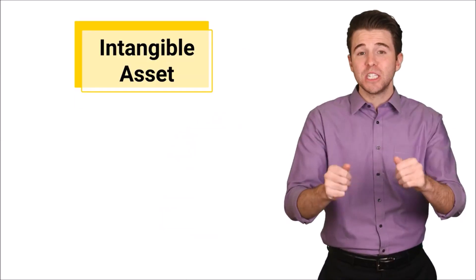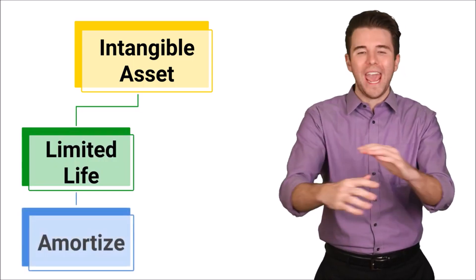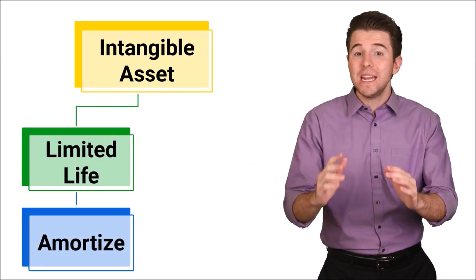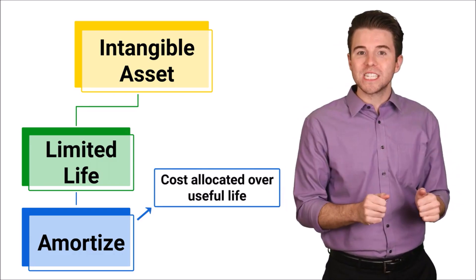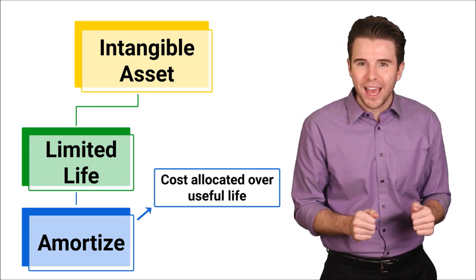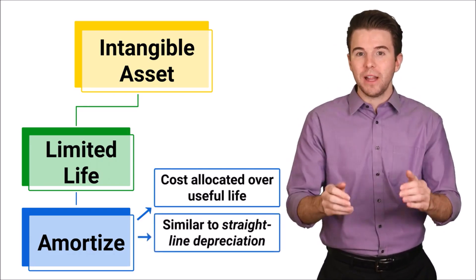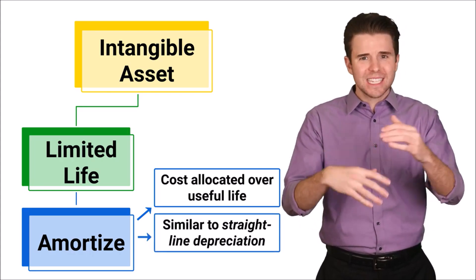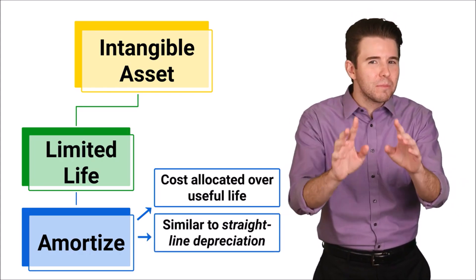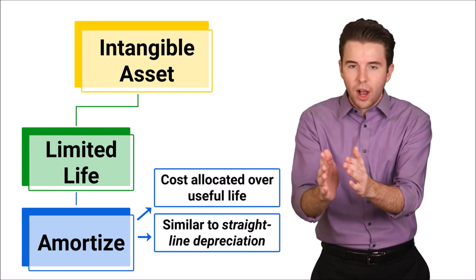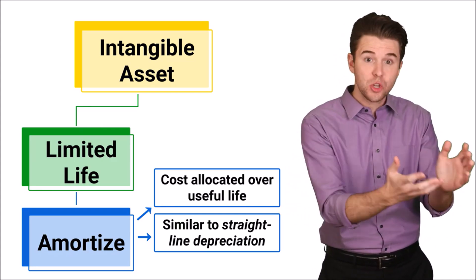When an intangible asset has a limited life, we have to amortize it, meaning that we allocate its cost over its estimated useful life. Amortization of intangible assets is similar to depreciation — it is simply a way to allocate the cost of an intangible asset to expense.